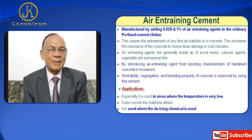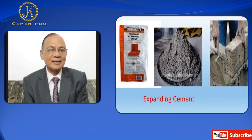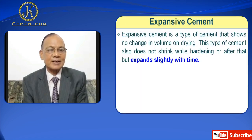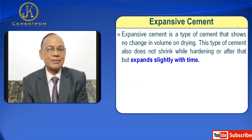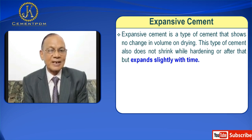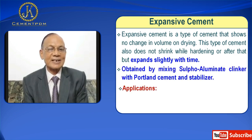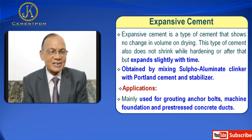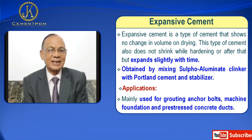Next is Expansive Cement. Expansive cement is a type of cement that shows no change in volume over time — it does not shrink while hardening or after, but expands slightly with time. It is obtained by mixing sulfo-aluminate clinker with Portland cement and a stabilizer. Applications: mainly used for grouting anchor bolts, machine foundations, and prestressed concrete work.